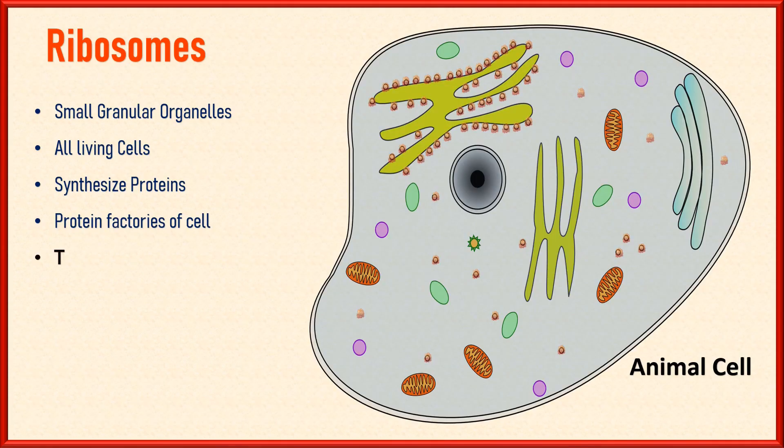Types of ribosomes. Ribosomes can be classified into two major types based on their location within the cell: free ribosomes and bound ribosomes.